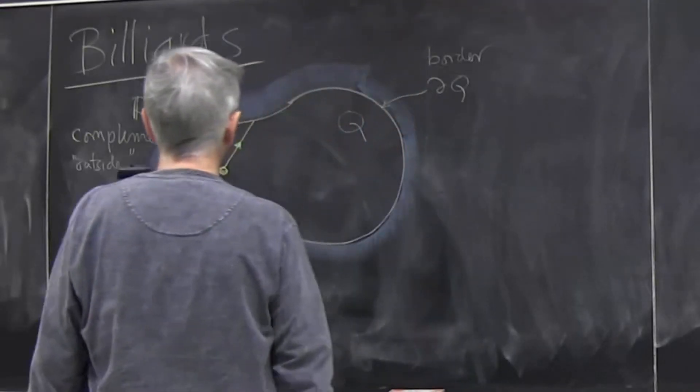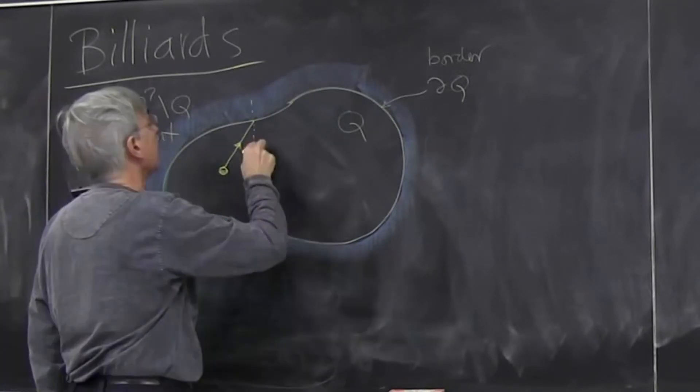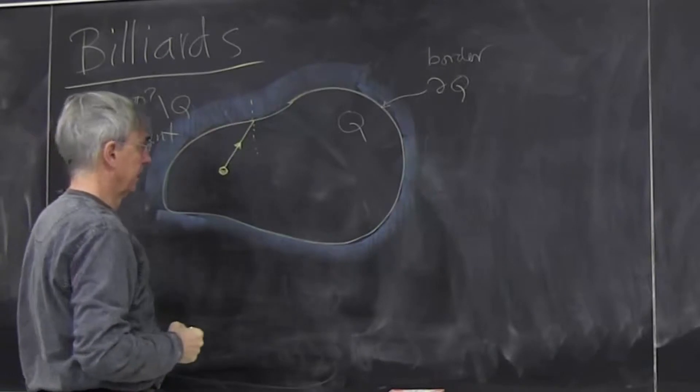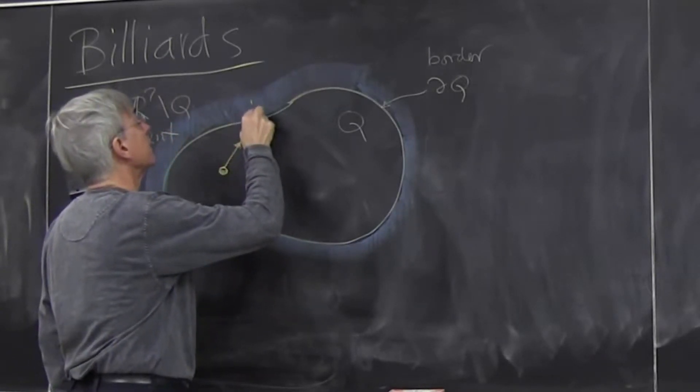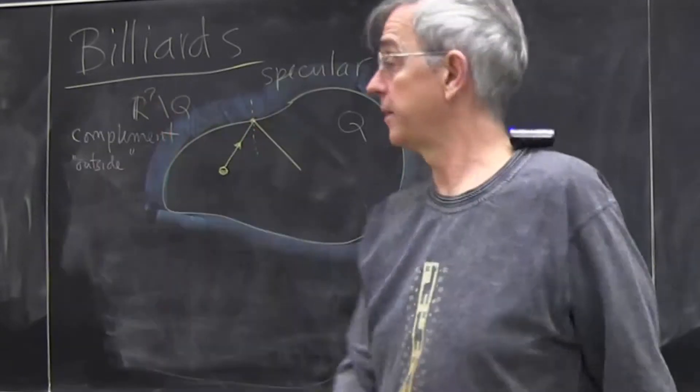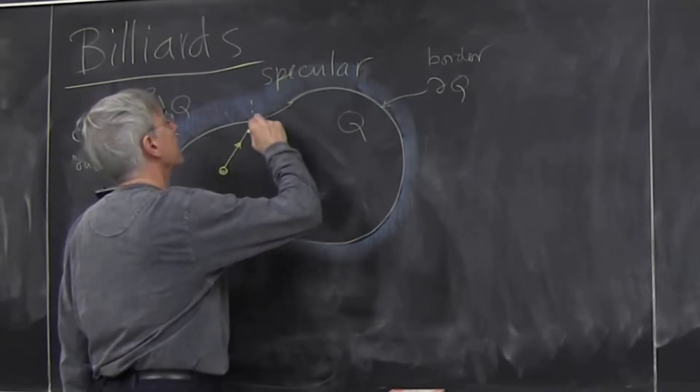There is no friction. So the billiard that I'll do is very idealized. Idealization comes in two places: one is that the velocity is constant, and the other one is so-called specular reflection, a mirror reflection, speculum.